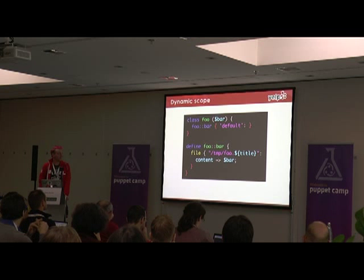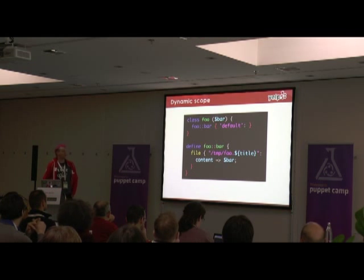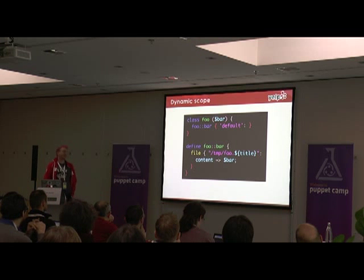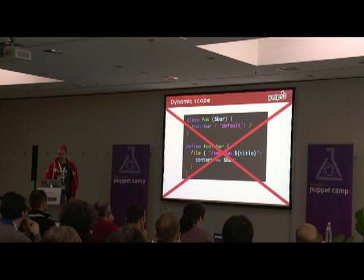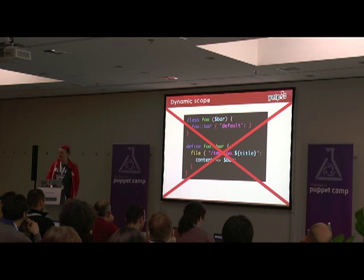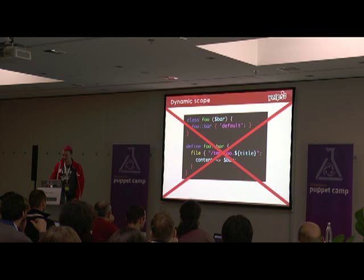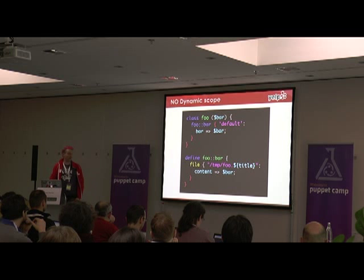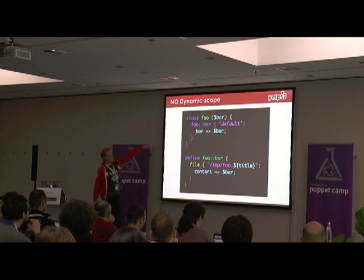Dynamic scope — if you are not aware, this is dynamic scope. The $bar variable there, we are just relying on that to get magically passed into foobar. Yeah, this will not work in Puppet 3. So anybody on Puppet 2.7 is going to have to fix all these things. What does fixed look like? Well, you just pass an extra parameter down — this line here is passing the extra parameter.